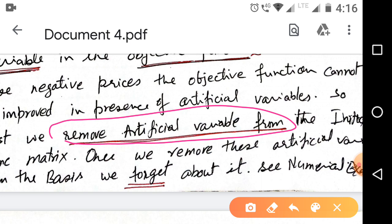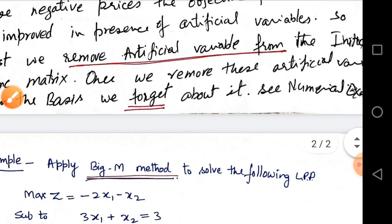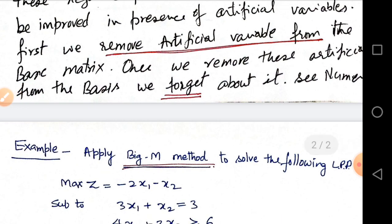When we remove this artificial variable, we forget about it. And final simplex table makes simplex table without artificial variable and go to simplex, as usual simplex method for getting an optimal solution.